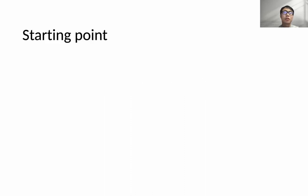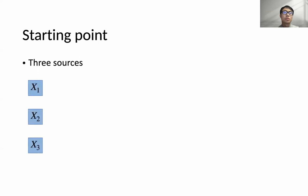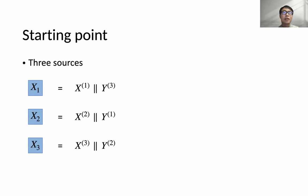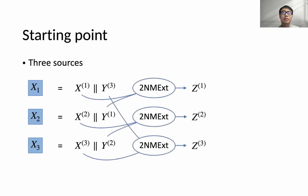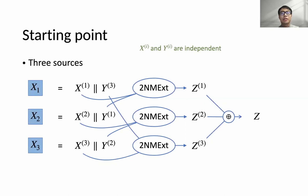Our starting point is the following construction. For simplicity, we only construct three sources here, and it is not hard to extend the ideas to the general multi-source setting. For three sources X1, X2, and X3, we first parse each source into two parts. Then, for each X_i and Y_i, we use a two-source non-malleable extractor to extract randomness as Z_i. Finally, we XOR all values Z1, Z2, and Z3 to get the output Z. We observe that each X_i and Y_i come from different sources and are thus independent, giving hope that we can reduce the overall security to the underlying two-source non-malleable extractor.